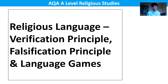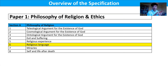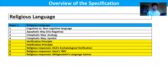In the previous video we had a look at the apophatic way and the cataphatic way, with a focus on Aquinas' views on analogy and Tillich's views on symbol. We are going to continue looking at religious language today by looking at the verification principle and the falsification principle, which are of course two challenges to the meaningfulness of religious language, and then we'll be looking at the religious responses to those challenges.